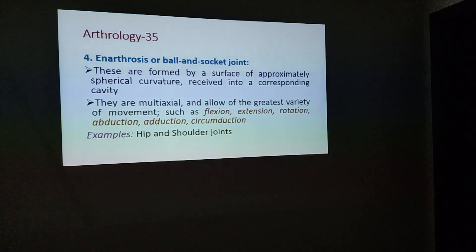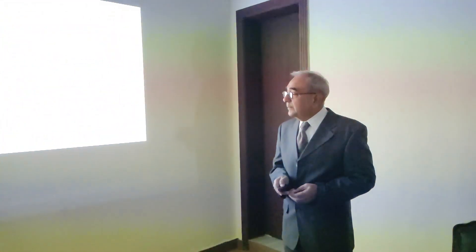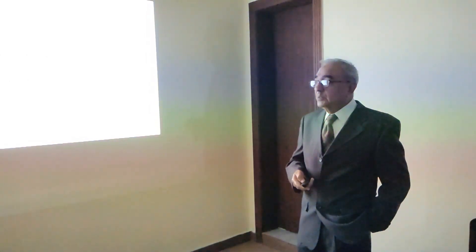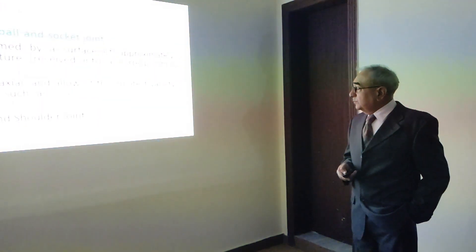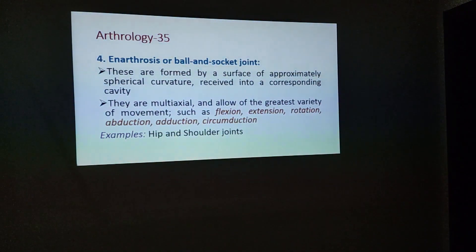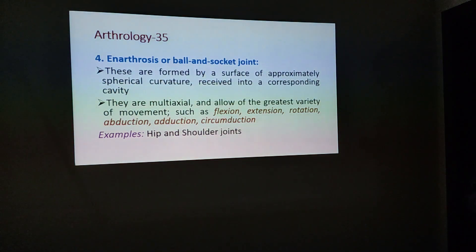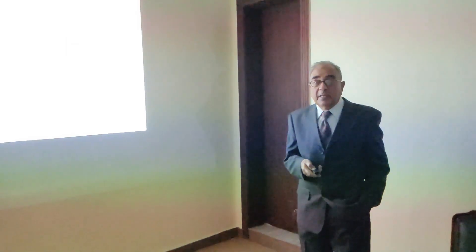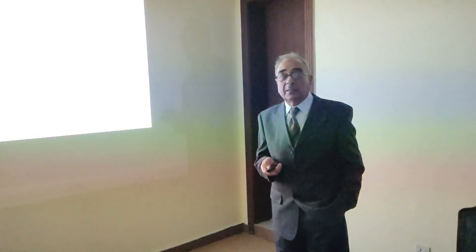Enarthrosis joints are the ball and socket joints. These are formed by a surface of approximately spherical curvature received into a corresponding cavity, such as the head of the humerus fitting into the glenoid cavity of the scapula, or the head of the femur fitting into the acetabulum. They are multiaxial joints allowing the greatest variety of movements: flexion, extension, rotation, adduction, abduction, and circumduction. Best examples are the hip and shoulder joints. However, in animals, even in these joints, the main movements are flexion and extension, while in human beings all types of movements are possible.